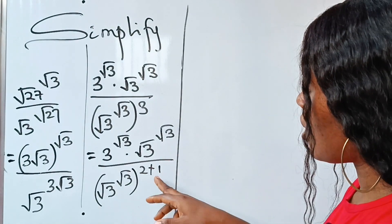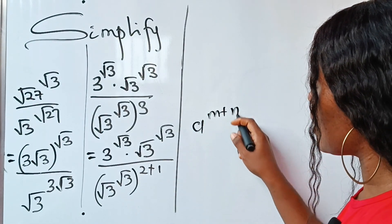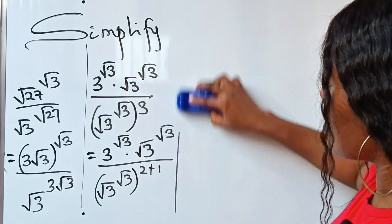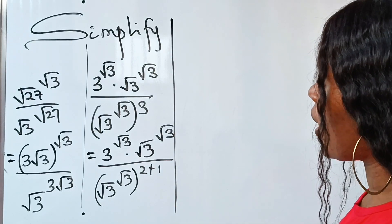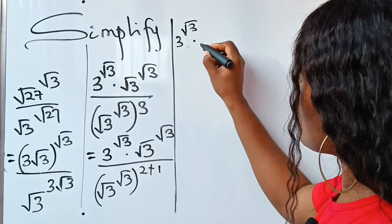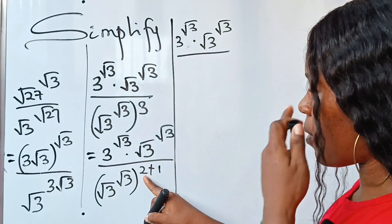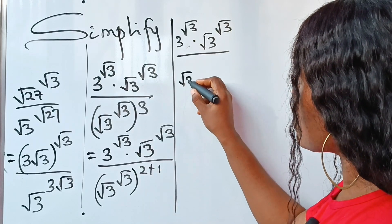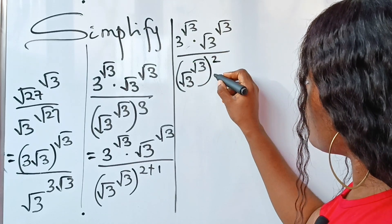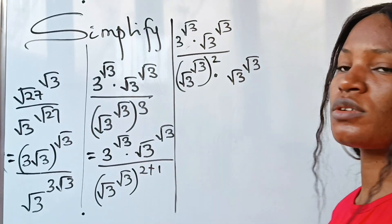When you have a to the power of m plus n, this means a to the power of m multiplied by a to the power of n. Applying that, the denominator becomes root 3 raised to the power of root 3 squared, multiplied by root 3 raised to the power of root 3.